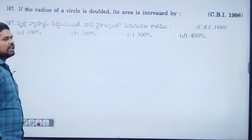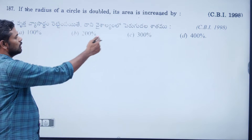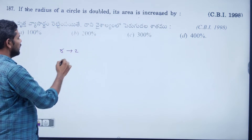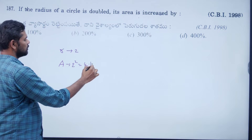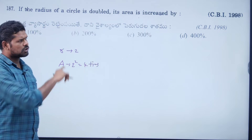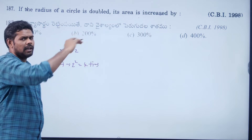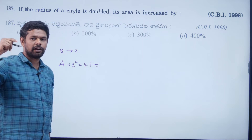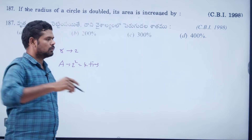If radius of a circle is doubled, what happens to the area? Radius doubled means area becomes 2² = 4 times. Any number of times the radius increases, area becomes that number squared times.